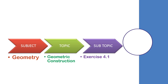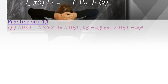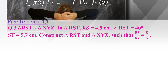Dear students, today we will learn Chapter 4: Geometric Construction, Exercise 4.1. In Question 3, triangle RST is similar to triangle XYZ. Given: RS equals 4.5 centimeters, angle RST equals 40 degrees, and side ST equals 5.7 centimeters. We need to construct triangle RST and triangle XYZ.